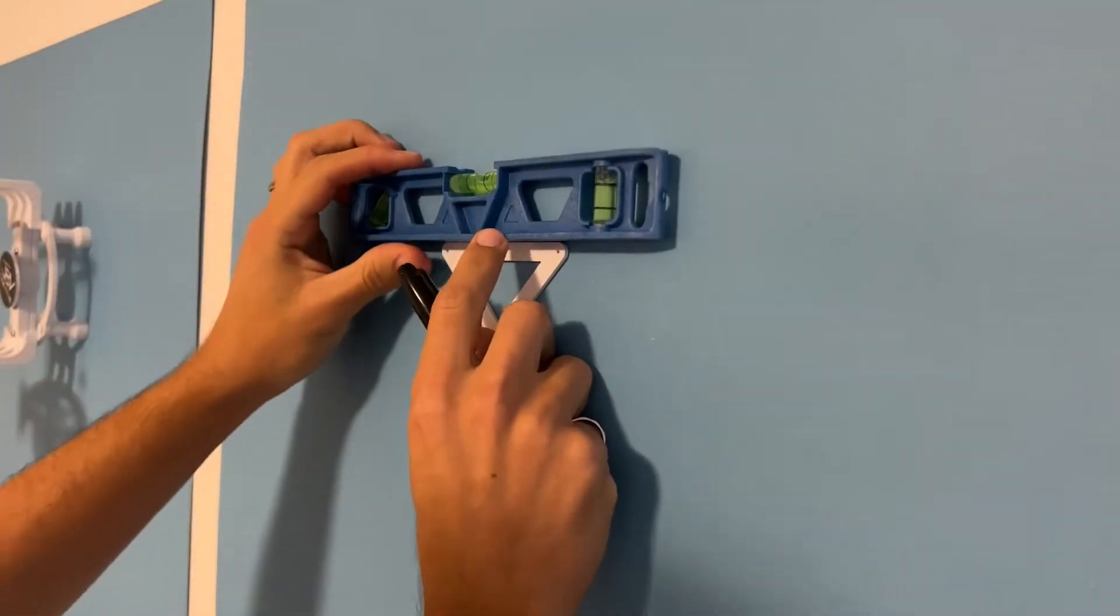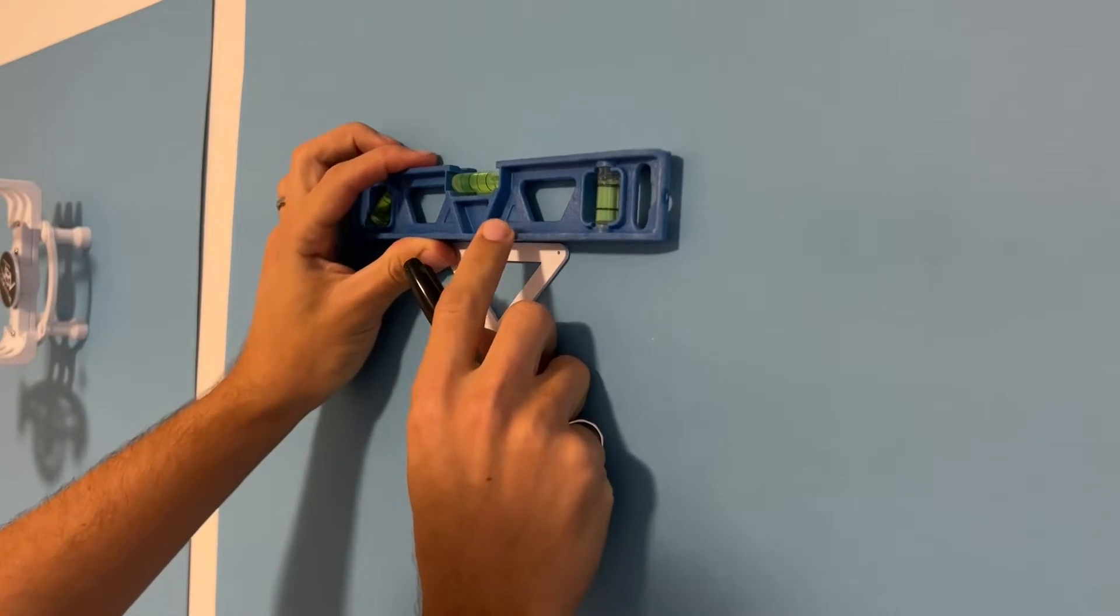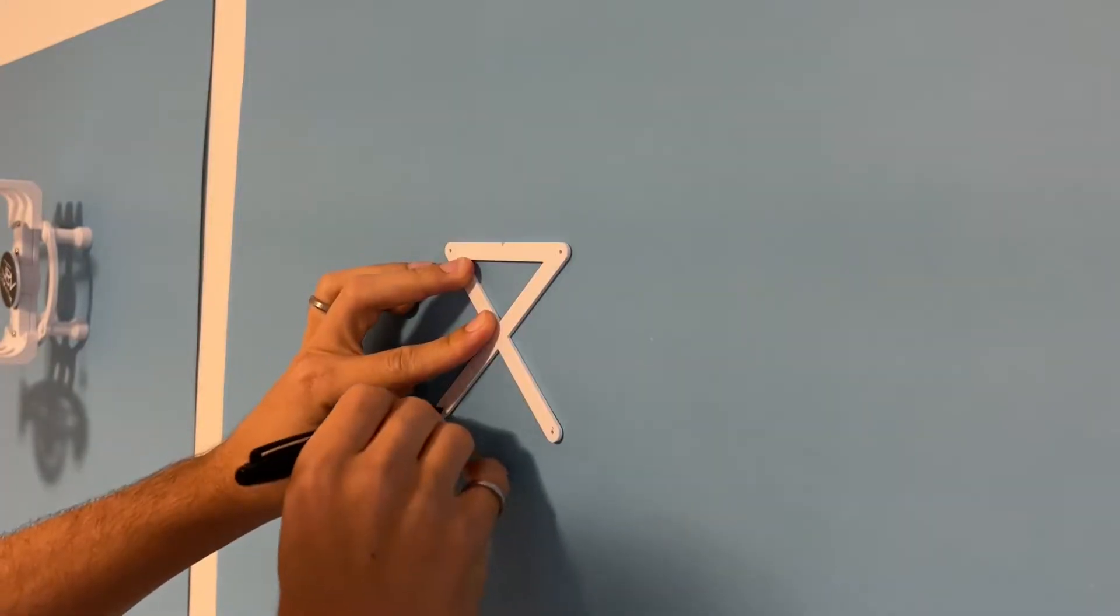Line up your wall mounting guide in whatever position that you want, and make sure that it's perfectly straight using a level. Then mark the holes with a pen or a marker.